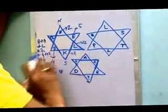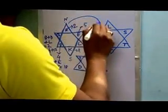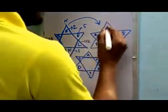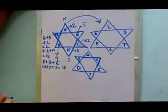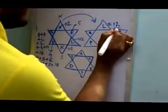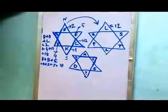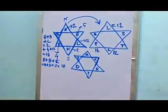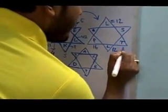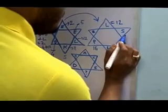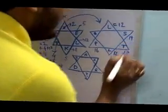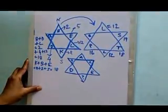Just apply the same logic to the second diagram. First, put the corresponding values of the letters: L equals 12, N equals 12, P equals 16, T equals 18 — wait, T equals 20. S equals 19, Q equals 17.